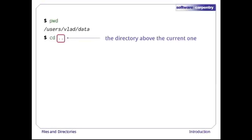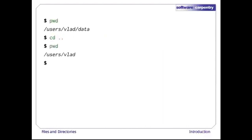Dot-dot is a special directory name meaning the directory containing this one, or more succinctly, the parent of the current directory. Sure enough, if we run pwd after running 'cd ..', we're back in /users/vlad.